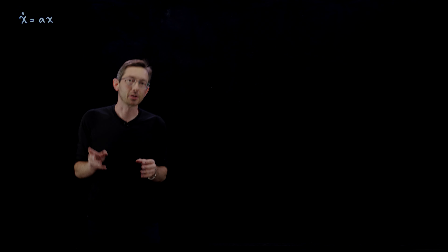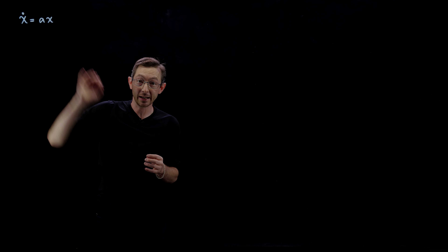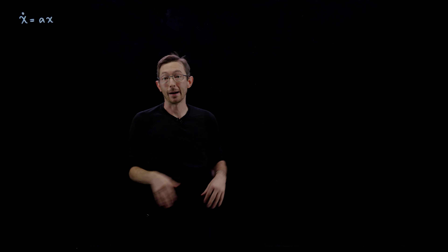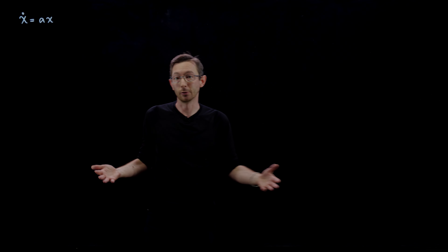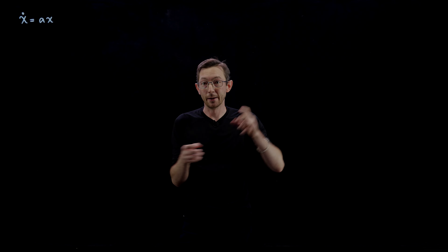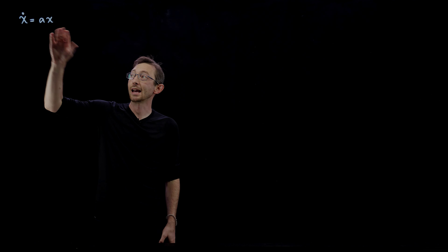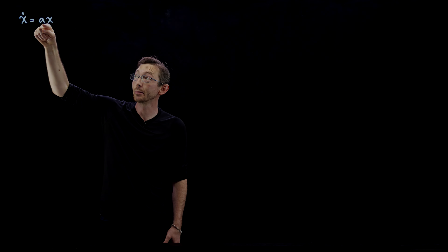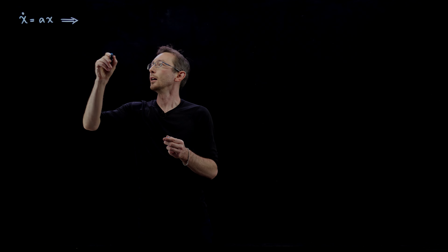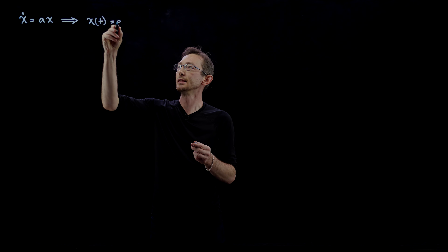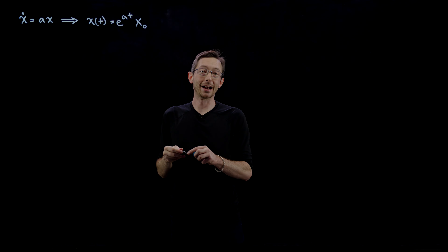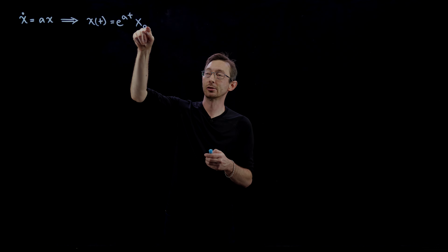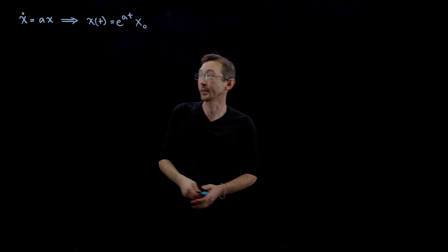Welcome back. In the last lecture we derived the simplest first-order linear differential equation for things like population growth of bunnies, compound interest on a loan, radioactive decay of a radioactive isotope, or thermal runaway in electronics. The equation is x_dot equals a*x, meaning the derivative of x with respect to time is linearly proportional to x with proportionality constant a. The solution is x(t) = e^(at) times the initial condition x naught, where x subscript zero means x at time zero.